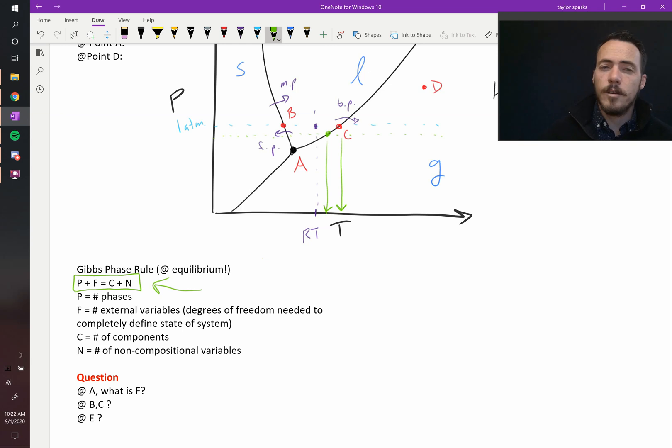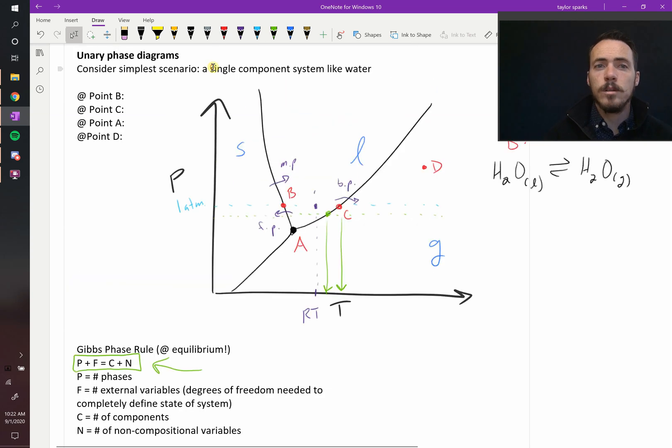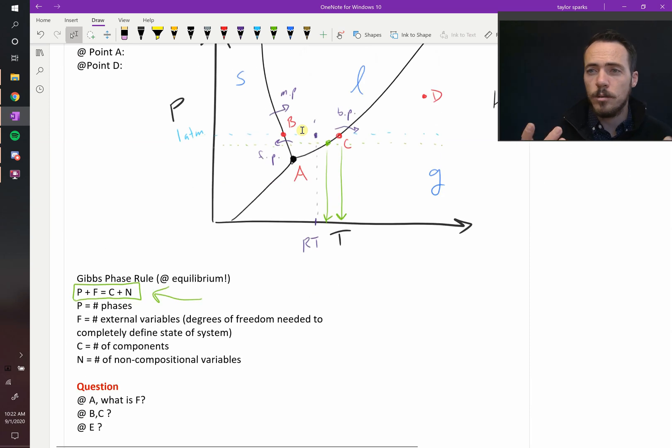P is the number of phases that are present. F we'll talk about in a second. C is the number of components in your system. If we're talking about water, where we said that this was a single component system, the only thing in there is water. It's not water mixed with salt or water mixed with sugar, it's just water. C in this case just can be one. It's one component.